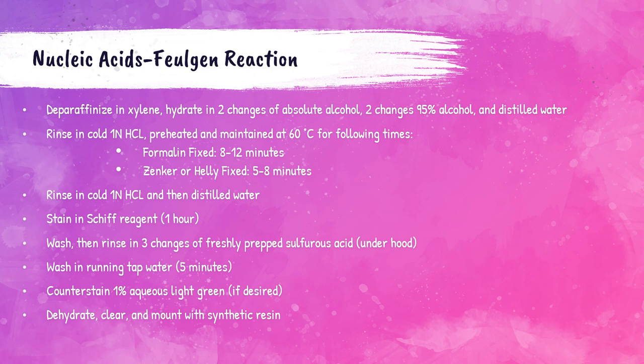The Feulgen reaction procedure: deparaffinize in xylene; hydrate in two changes of absolute alcohol, two changes of 95% alcohol, then distilled water; rinse in cold HCl; place in preheated HCl at 60°C — 8 to 12 minutes for formalin-fixed tissue or 5 to 8 minutes for Zenker's or Helly's-fixed tissue; rinse in cold HCl then distilled water; stain in Schiff reagent for one hour; wash; rinse in three changes of freshly prepared sulfurous acid under a fume hood; wash in running tap water for five minutes; optionally counterstain with 1% aqueous light green; dehydrate, clear, and mount with a synthetic resin.